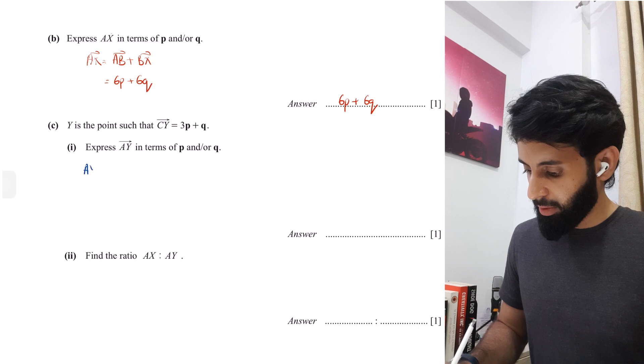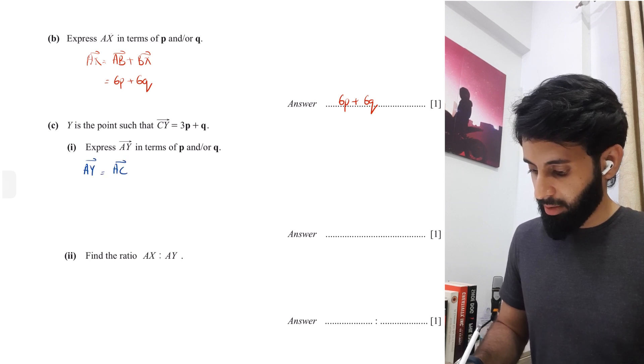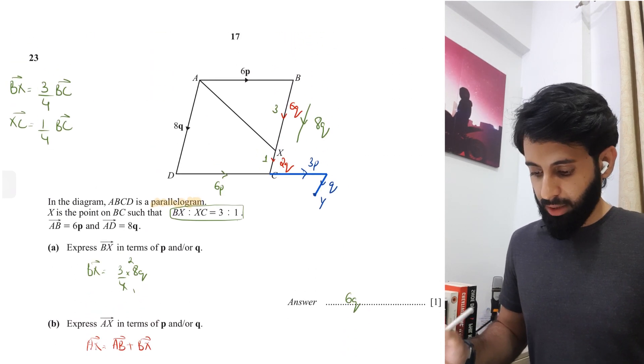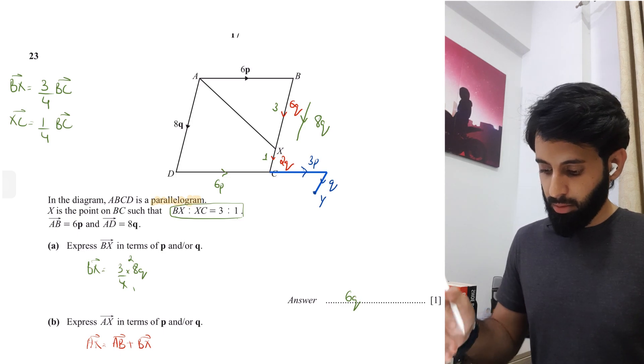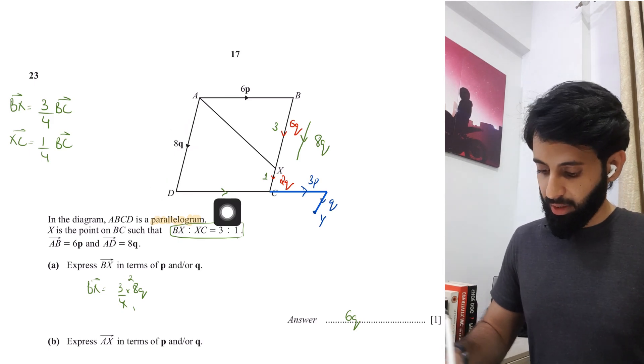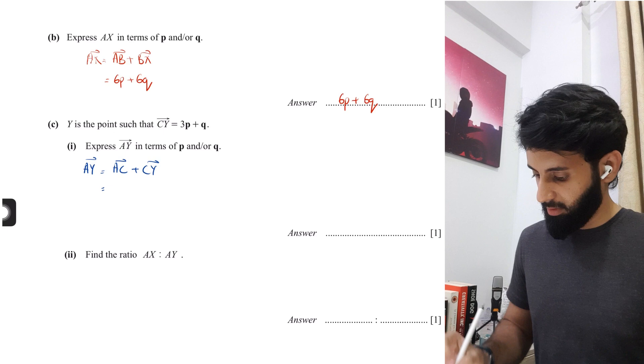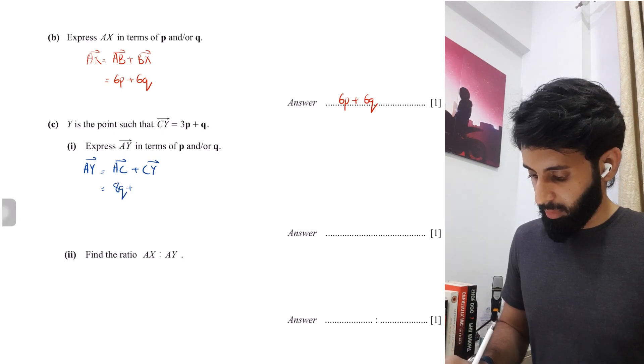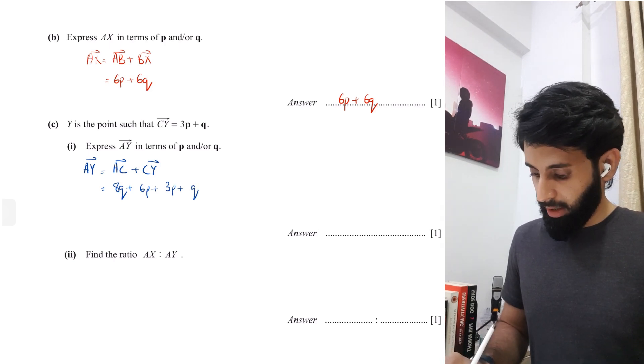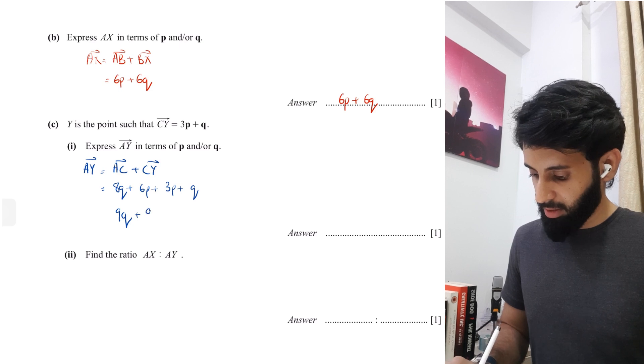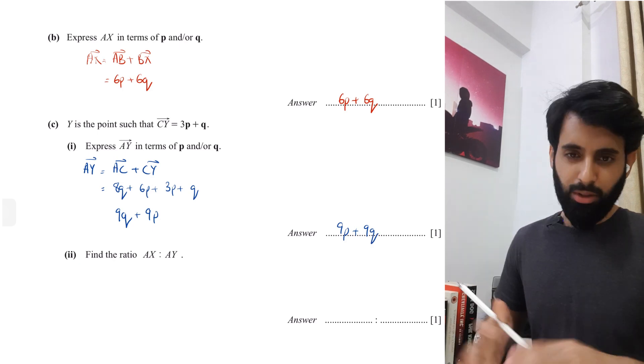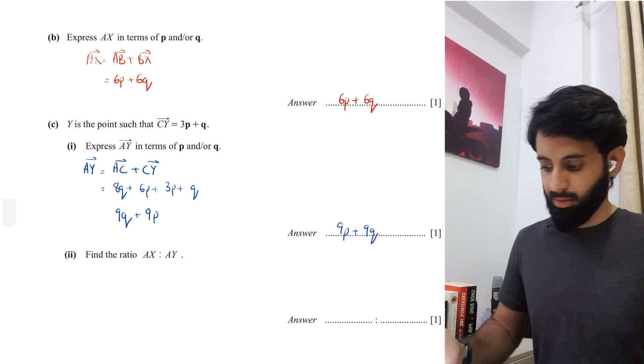If I want to go from A to Y, I can do that by going from A to C and then from C to Y. C to Y I already know—the question tells me. A to C we can work it out—it's 8Q plus 6P. I hope you understand: A to D and then D to C, so that's 8Q plus 6P. Then plus CY, which is 3P plus Q. So 8Q plus Q is 9Q, 6P plus 3P is 9P. AY equals 9P plus 9Q.